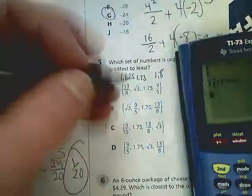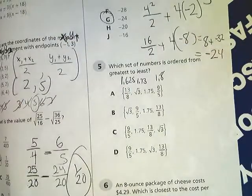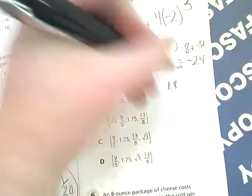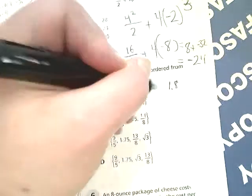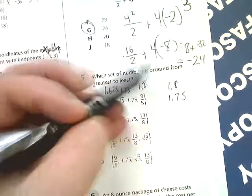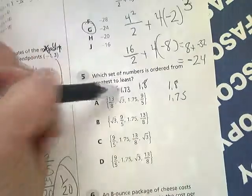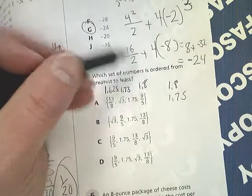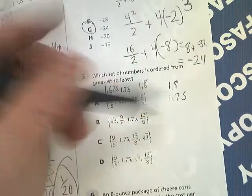I'm doing greatest to least, so I'll make a little chart and put them in order. 1.8 would be the greatest. 1.75 would come next, because all of them start with 1, and then you look at the second number, or the tenths place. 8 is bigger than 7, so 7 comes next.